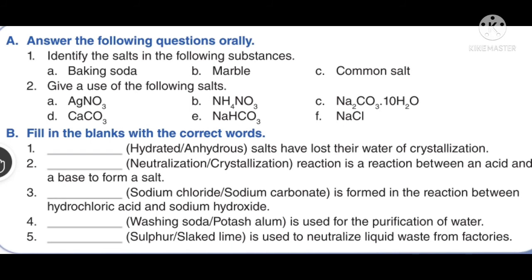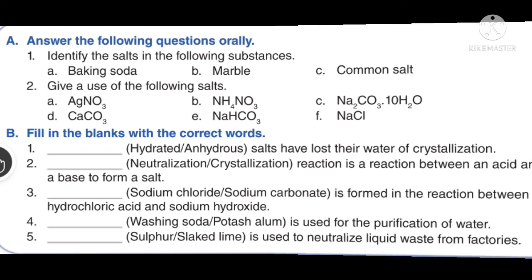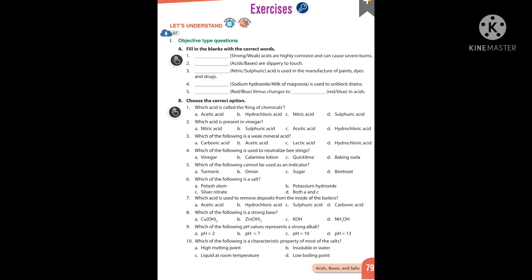Now exercises from page number 79. Fill in the blanks: strong acids are highly corrosive and can cause severe burns. Bases are slippery to touch. Sulfuric acid is used in the manufacture of paints, dyes, and drugs. Sodium hydroxide is used to unblock drains. Litmus changes from blue to red in acids. Which acid is called the king of chemicals? Sulfuric acid. Which acid is present in vinegar? Acetic acid.